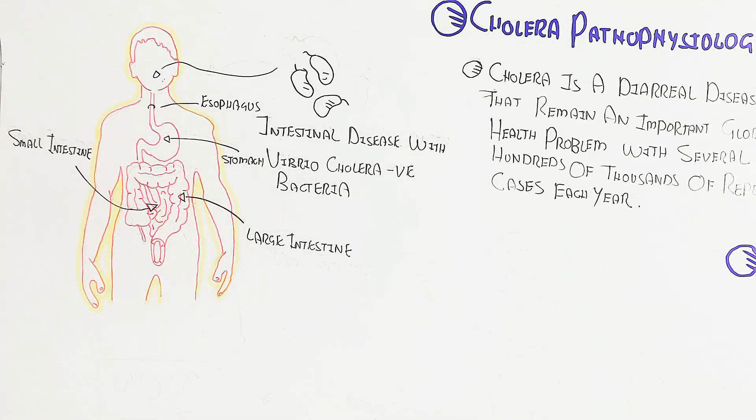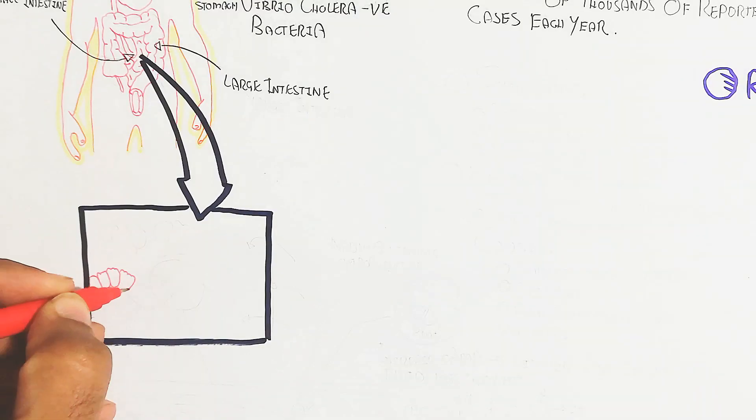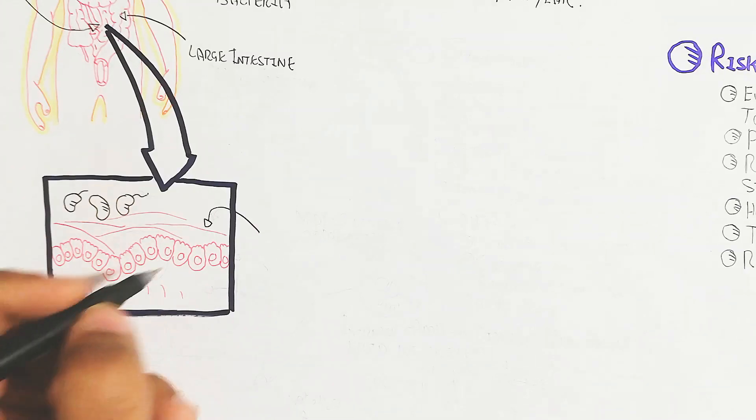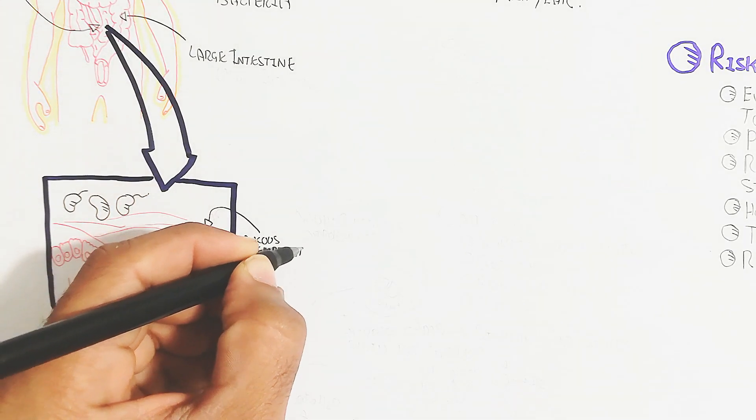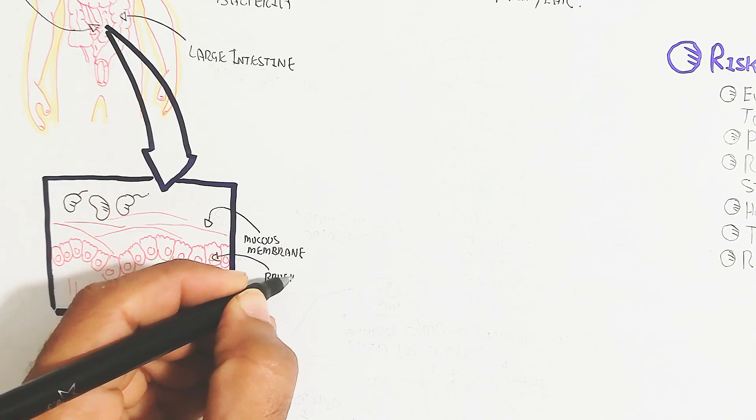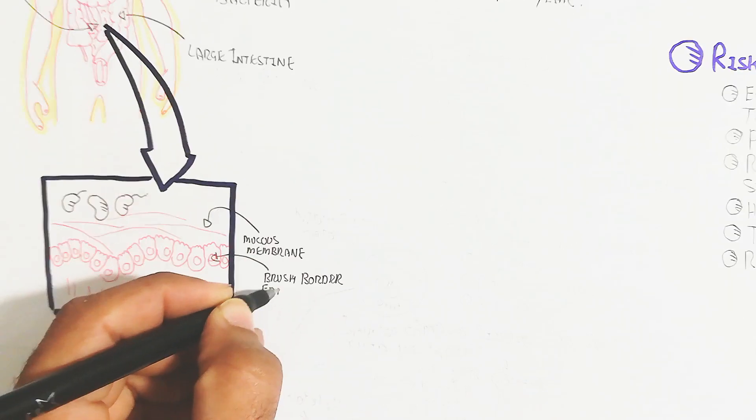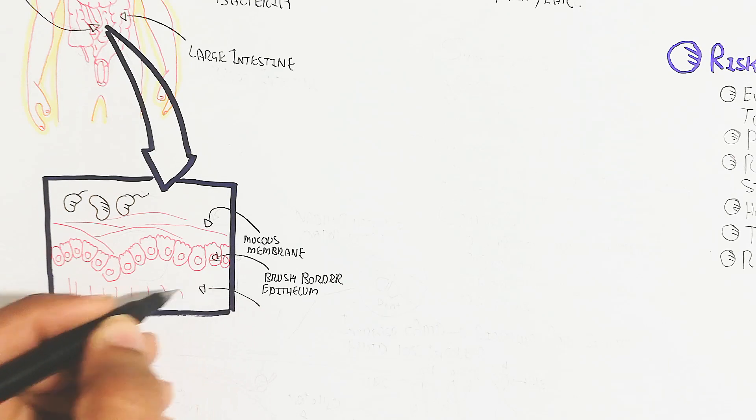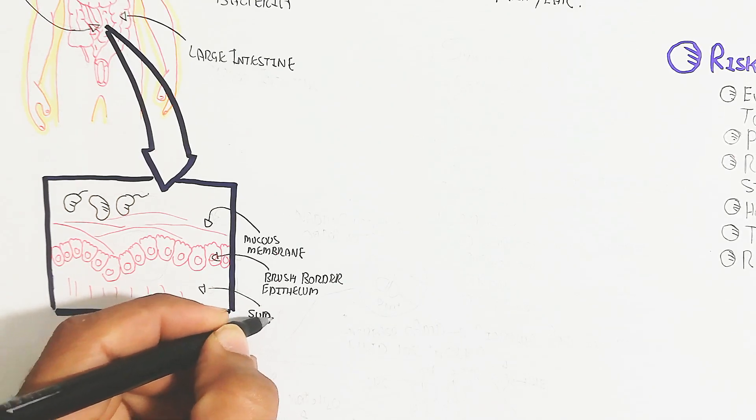This is the large intestine and small intestine. Let's begin to understand the small intestine, which contains the lumen and mucous membrane. This is the epithelial cell, the brush border epithelium, and this is the submucosal layer.